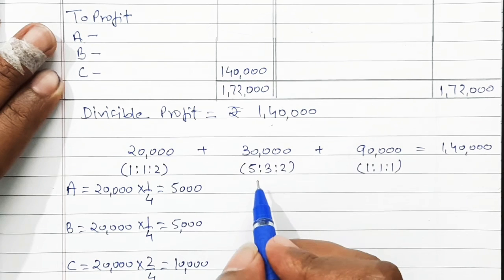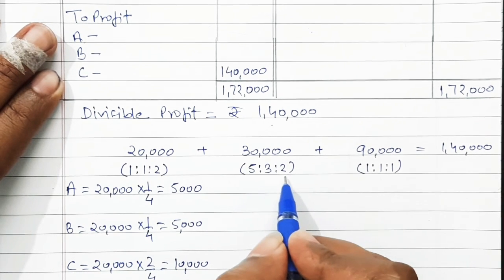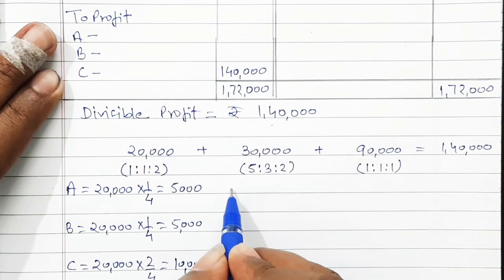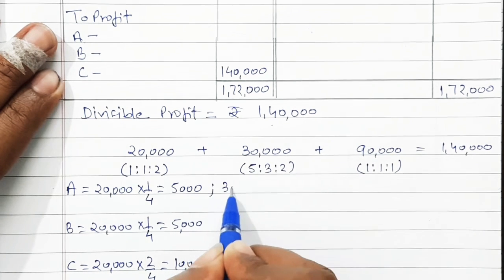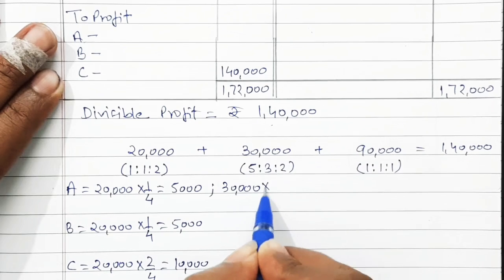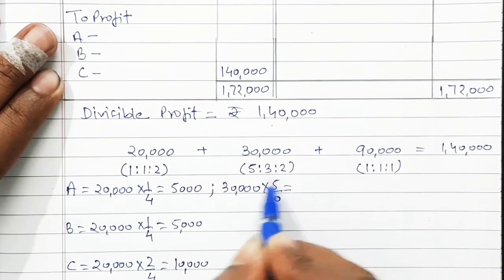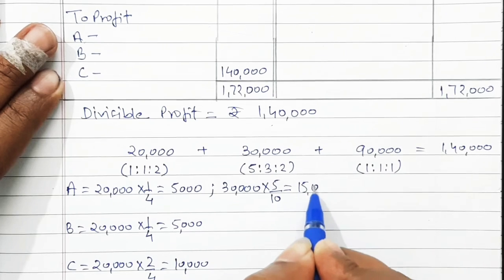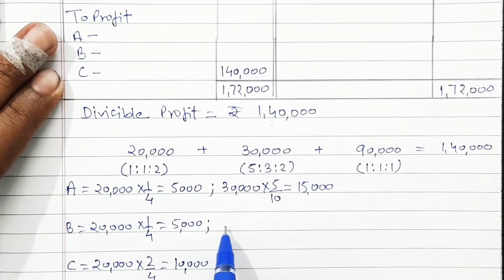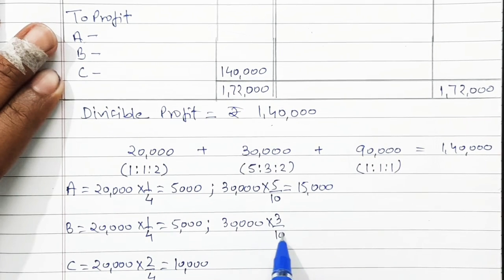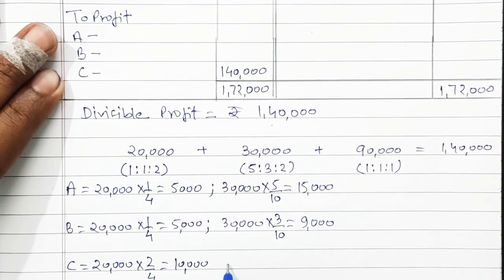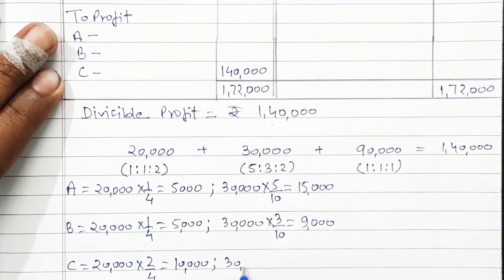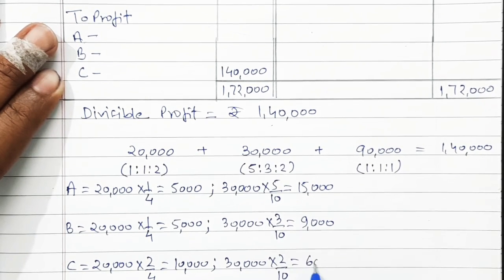The next Rs. 30,000 is distributed in the ratio 5:3:2. For A: 30,000 × 5/10 = Rs. 15,000. For B: 30,000 × 3/10 = Rs. 9,000. For C: 30,000 × 2/10 = Rs. 6,000.